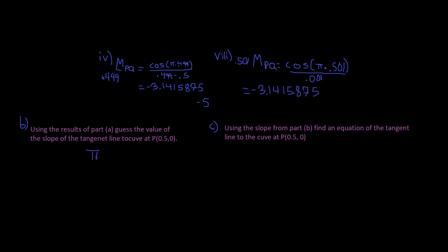Now let's look at this one. It says: using the slope from part B, find an equation of the tangent line to the curve at P. The point is (0.5, 0.5), and the slope is negative pi. We've got to plug it into the point-slope form. So point-slope form looks like this.